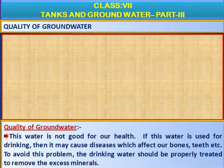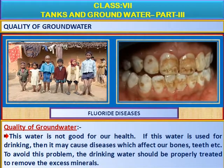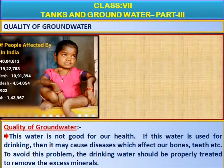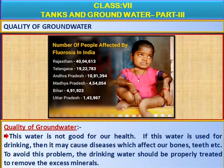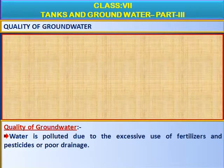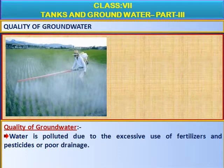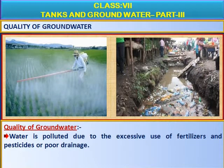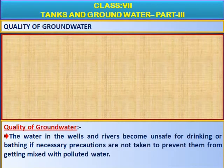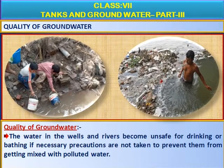This water is not good for our health. If this water is used for drinking, then it may cause diseases which affect our bones, teeth, etc. To avoid this problem, the drinking water should be properly treated to remove the excess minerals. We also pollute our groundwater due to the excessive use of fertilizers and pesticides and poor drainage. The water in the wells and rivers becomes unsafe for drinking or bathing if necessary precautions are not taken to prevent them from getting mixed with polluted water.